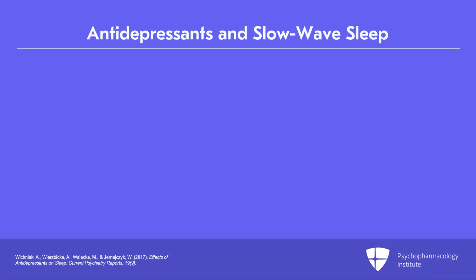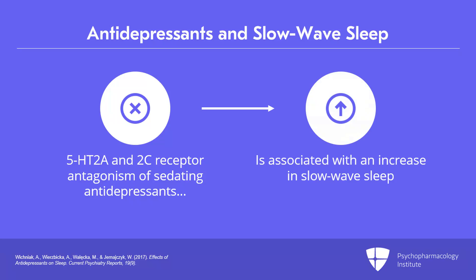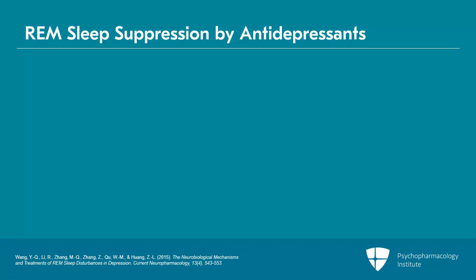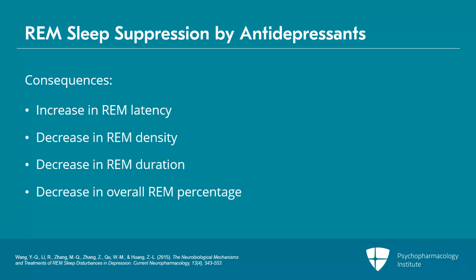With regards to parameters of sleep depth, it is postulated that 5-HT2A and 2C receptor antagonist action of sedating antidepressants, such as trazodone and mirtazapine, is associated with an increase in slow-wave sleep. In terms of REM sleep parameters, the majority of antidepressants — except bupropion, trazodone, and mirtazapine — tend to act as REM sleep suppressants, as suggested by these medications causing an increase in REM latency, a decrease in REM density, and REM duration and overall REM percentage.